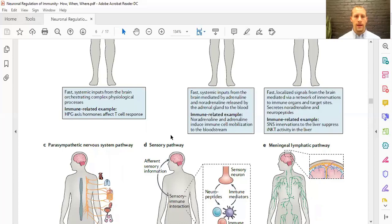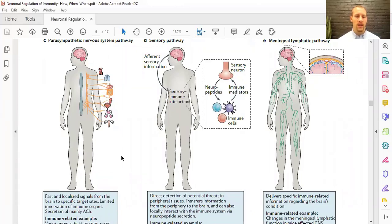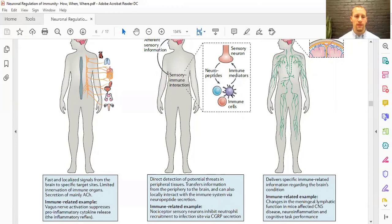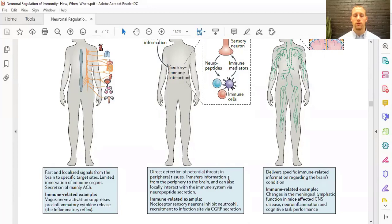Let's go to the parasympathetic nervous system. We have fast localized signals for specific target sites. The main one we talked about before was that vagus nerve activation, which is suppressing inflammation or the inflammatory reflex in general. A sensory pathway is what I mentioned before with nociception or basically pain or damage to cells. That can activate the brain to then come back down and initiate these local responses to immune cells. It has direct detection of potential threats, transfers information from the periphery to the brain, and can also interact locally with the immune system.